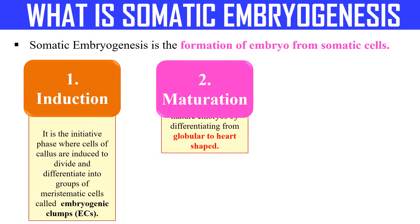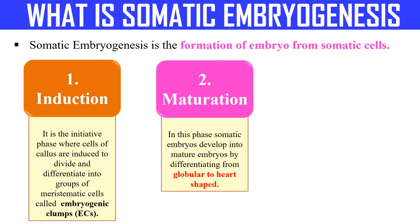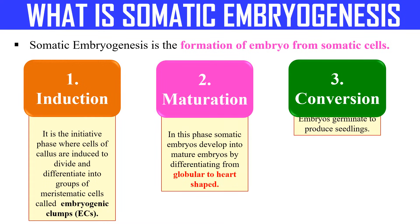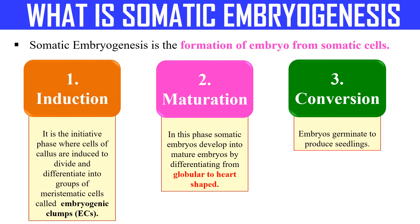The second step is maturation. In this phase, these embryogenic clumps or cells are developed into the mature embryo by changing from globular to heart-shaped embryo. The final step is conversion, in which the embryo is now germinated to produce the seedling. These are the three phases of somatic embryogenesis.